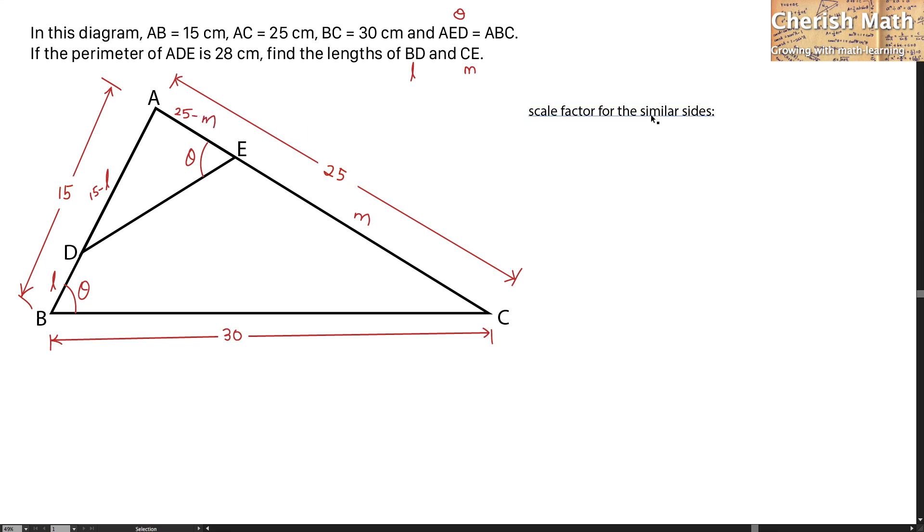I'm going to work out the scale factor for the similar sides. That would be 15 for the side AB, and the side AE is similar to each other. That would be AB, the measurement is 15, divided by AE, which is 25 minus M. This is the scale factor that we are going to apply on another side, which is AC, which is 25, divided by its similar side AD, which is 15 minus L.